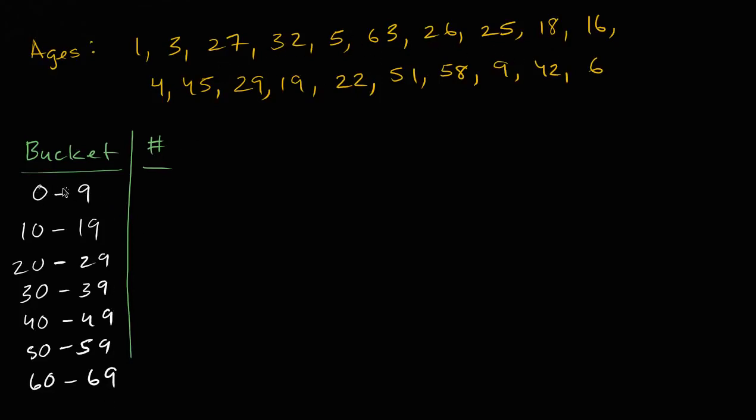So then how many people fall into the zero to nine-year-old bucket? Well, it's going to be one, two, three, four, five, six people fall into that bucket. How many people fall into the 10 to 19-year-old bucket? Well, let's see. One, two, three. Three people.